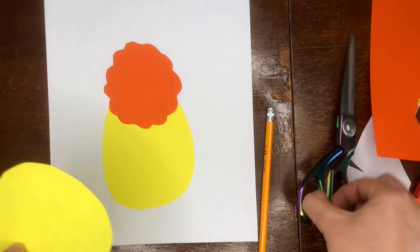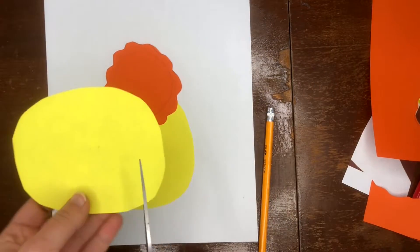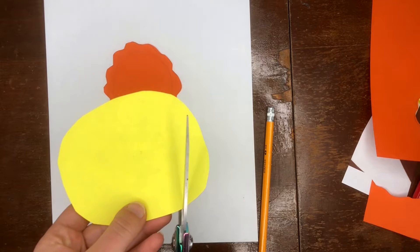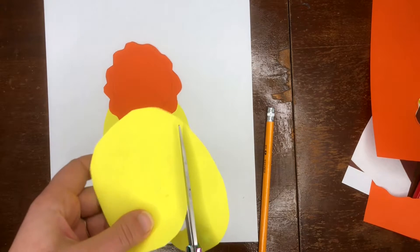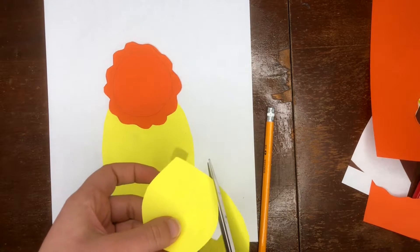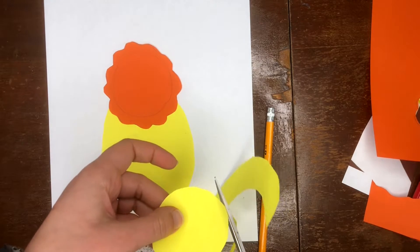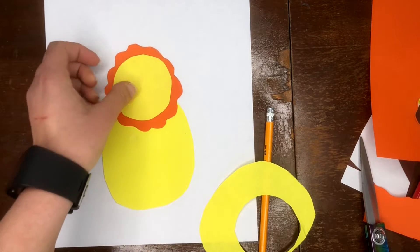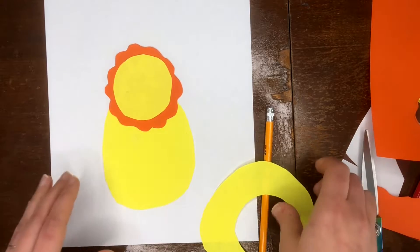I realized that I made my yellow circle for the head way too big. I'm just gonna cut that out again. That's okay. And that's gonna go right there. We have our body. We have our head. We have our hair.